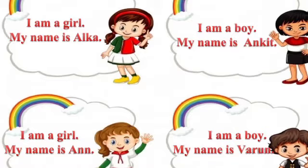Now let's try to understand common names and special names. First one — I am a girl. My name is Alka. Girl is a common name. Alka is a special name. Next — I am a boy. My name is Ankit. Boy is a common name. Ankit is a special name.